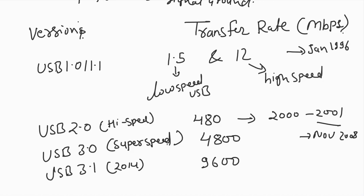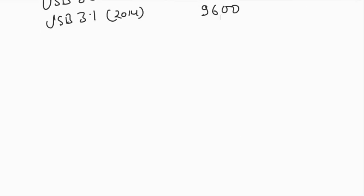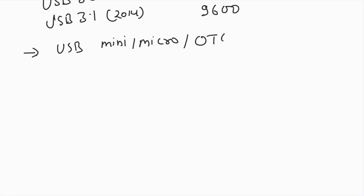So that was the origin of USB and how it progressed. Now, USB also involves different things like USB mini, USB micro, and OTG. Mini and micro are basically connector types that follow USB 2 or USB 3 standards. OTG is a very interesting feature — its full form is On The Go.